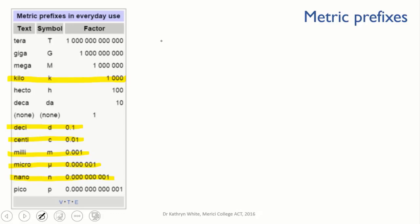One kilometer is equivalent to 1,000 meters, because kilo means 1,000. Deci means a tenth. A decimeter is equivalent to a tenth of a meter, or 0.1 meters. And this means the same as saying that 10 decimeters is equivalent to 1 meter.